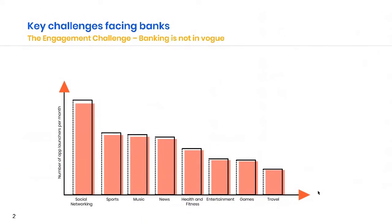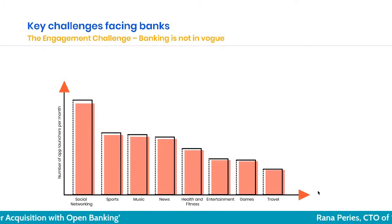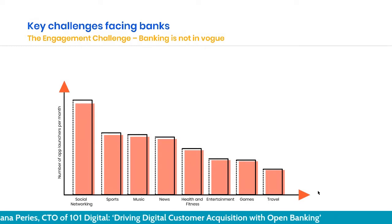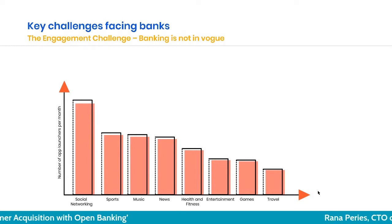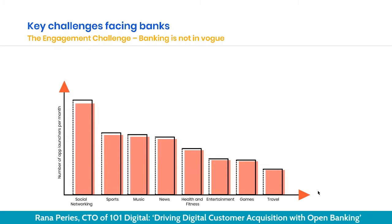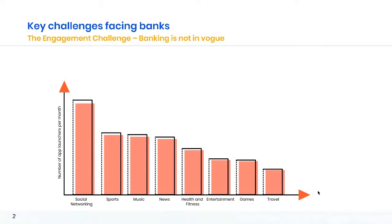A little bit of background on some of the key challenges that banks and fintechs are facing. This chart is really about: if you have a number of different apps on your mobile device that you use regularly, which ones get the most usage in a day? I put this up to prove a point — banking is not in vogue. Banking is not something people go to use every day, and hence your favorite banking app, even though it might be very good, doesn't appear on this chart.